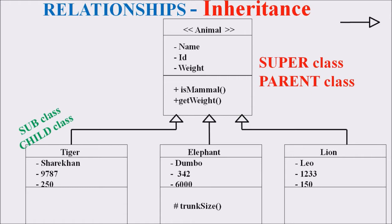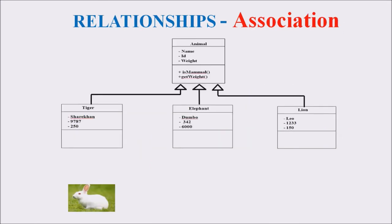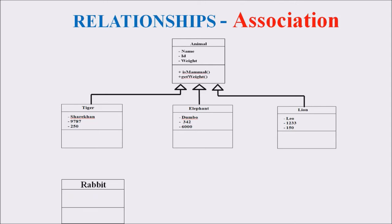Next, we represent the relationship association. Association can be represented by a straight line. Consider a class Rabbit. This Rabbit class is associated with the Tiger class, and the association is represented by a straight line. The association between Tiger and Rabbit is that Tiger eats Rabbit.